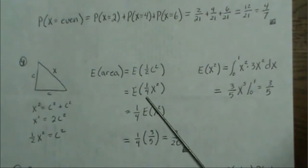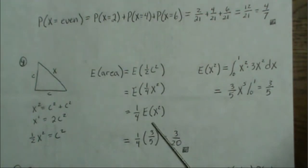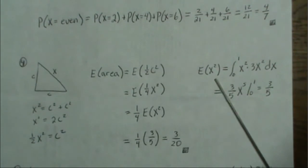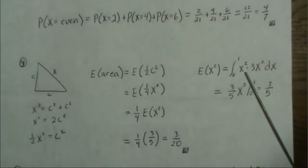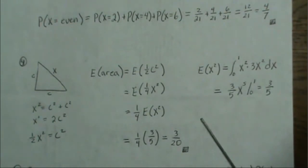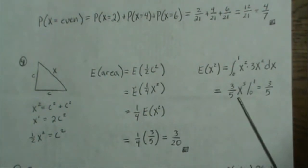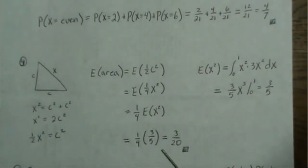The one fourth is a constant, so we factor it out and need to find the expected value of x squared. We compute E[x²] by integrating x squared times the density over all possible values, and we get three fifths. Putting that back in, our final answer is three over 20.